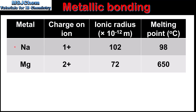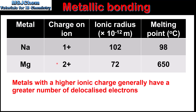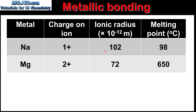Next we look at the effect of the charge on the ion and the ionic radius. In this table we have data for two metals, sodium and magnesium. Sodium is a group 1 element therefore it has a 1+ charge, and magnesium is a group 2 element therefore it has a 2+ charge. So magnesium has a higher charge on the ion and it also has more delocalized electrons. If we compare the ionic radii, magnesium has a smaller ionic radius than sodium, and the melting point of magnesium is higher than that of sodium. So here we can see the effect of all three factors: magnesium has a higher charge on the ion, more delocalized electrons, and a smaller ionic radius than sodium, and this results in a stronger metallic bond and a higher melting point.